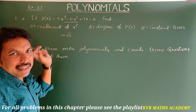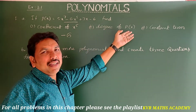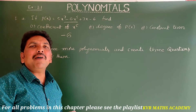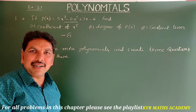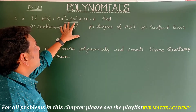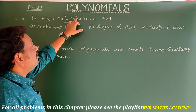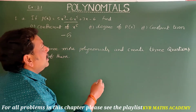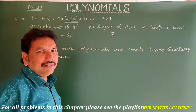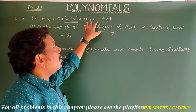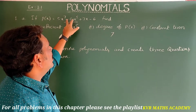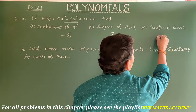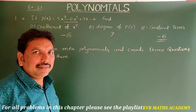Next, the degree of p(x). The degree means the highest power of the term in the polynomial. Here the highest power is 7, so the degree is 7. Next, the constant term — the terms with variables are 5x⁷, -6x⁵, and 7x — so the constant term is minus 6.